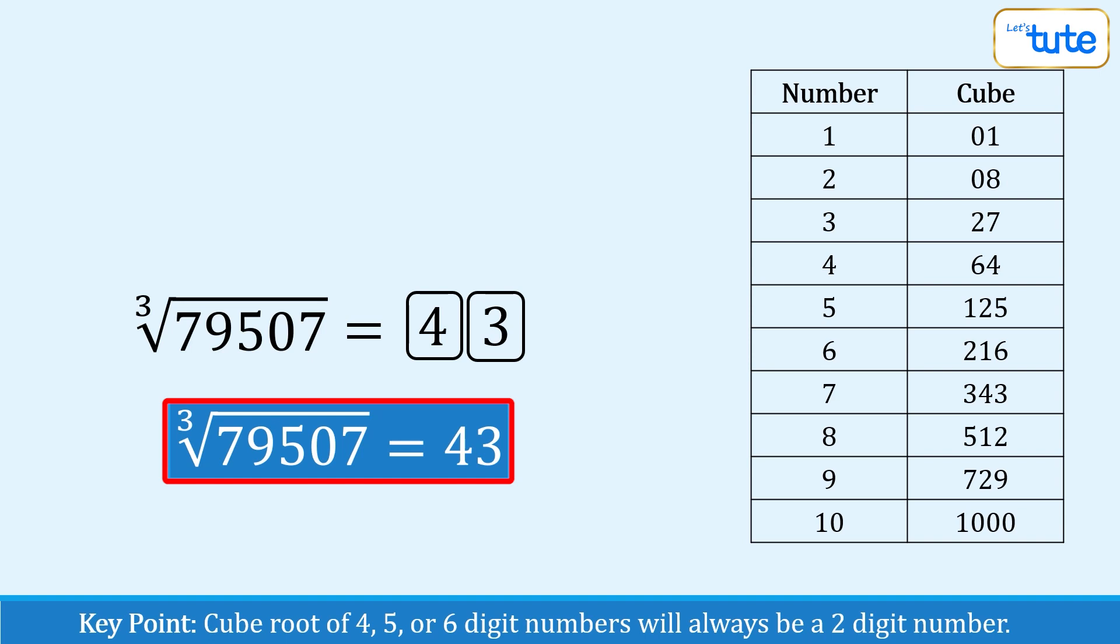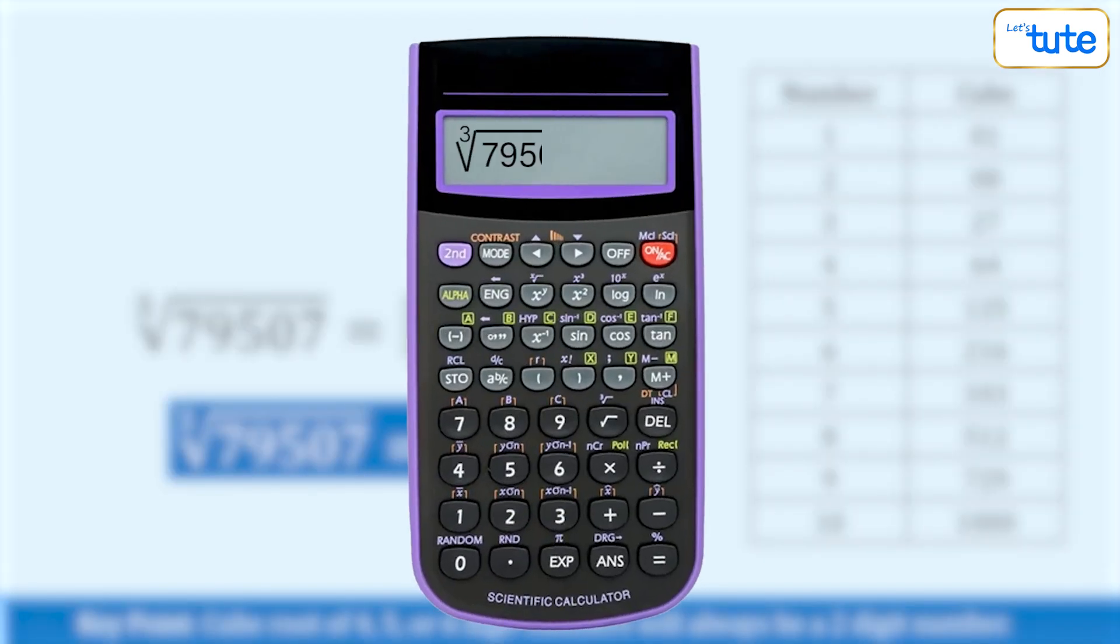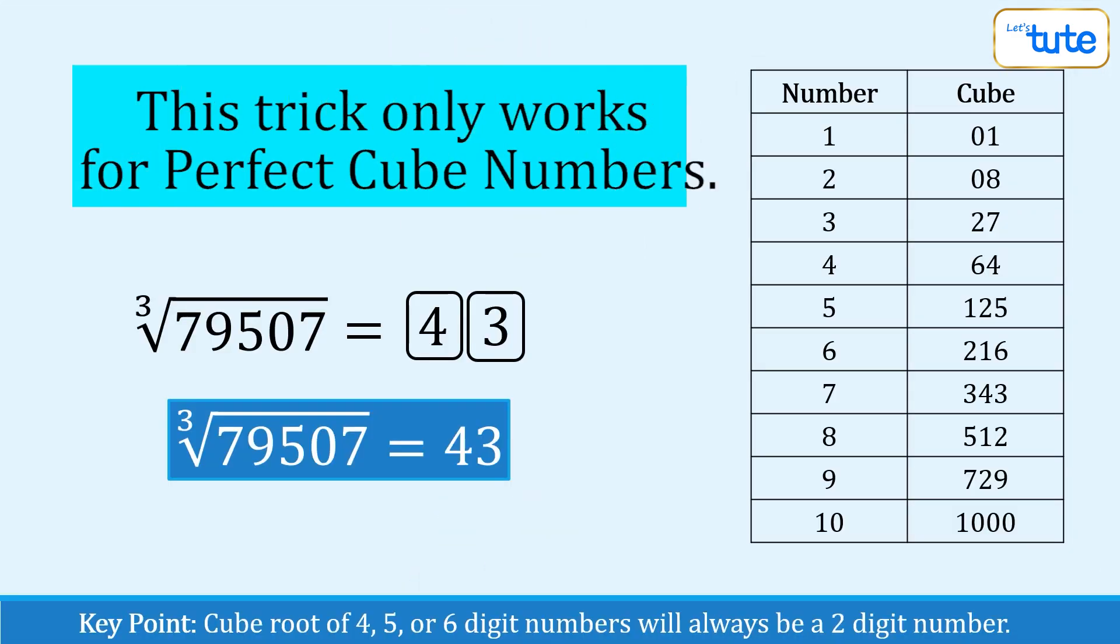If you are not so sure that your answer is correct, you can always use a calculator and check your answer. Please remember that this trick only works with perfect cube numbers like 1, 8, 27, 64 and so on and will not work with any random numbers.